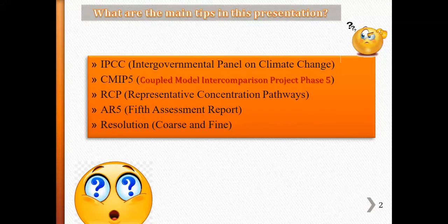The main topics in this presentation are: first, IPCC — the Intergovernmental Panel on Climate Change; second, CMIP5 — Coupled Model Intercomparison Project Phase 5; third, RCP — Representative Concentration Pathways, which are the scenarios CMIP5 works with; fourth, AR5 — the Fifth Assessment Report; and finally, resolution — coarse and fine resolutions for different models.